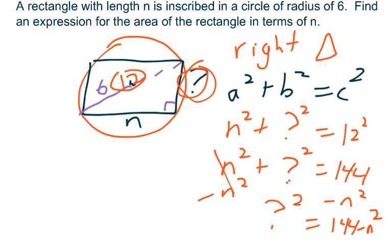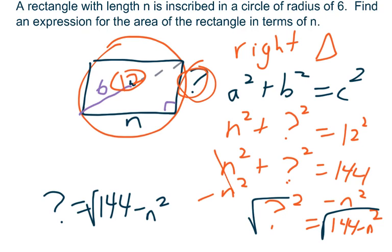And then to find out what that question mark really is, I need to get rid of the squared on it. So I'm going to take the square root of both sides. And the question mark really equals the square root of 144 minus n squared. So now that question mark is right here. It stands for the square root of 144 minus n squared.